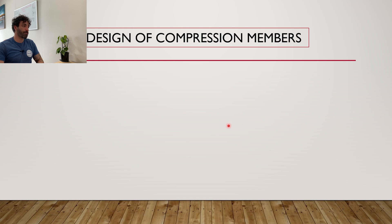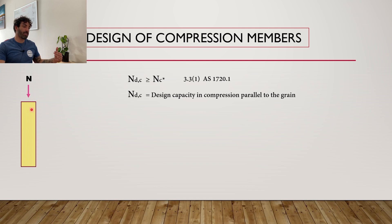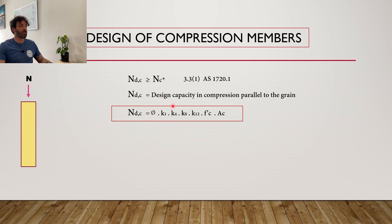So how do we start? The capacity in compression of the member needs to be greater than the load. We need to work out the design capacity in compression parallel to the grain — meaning the force is in the same direction as the fibers in the timber. Like any other material, steel or concrete, this design capacity is essentially the characteristic strength in compression times the cross-sectional area of the column. But that's not all — there are additional factors to account for.